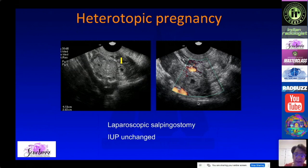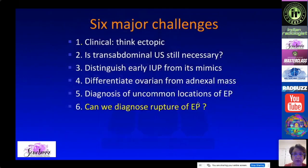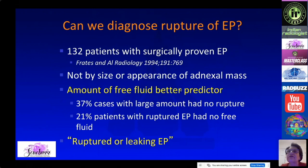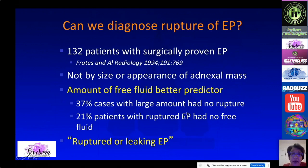Can we diagnose rupture of an ectopic pregnancy on ultrasound? The bottom line is that you really cannot definitively. If there is a large amount of free fluid or free blood, that is a better predictor. The key point is: whether the tube is actually ruptured or just leaking — with blood coming out the fimbriated end of the fallopian tube — probably doesn't matter, because if there is a large amount of blood in the abdomen, the patient will need to go to the OR.